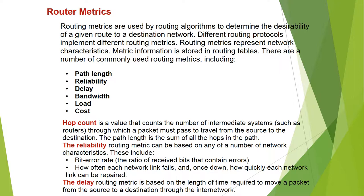Reliability routing metrics can be based on any number of network statistics. These include the bit error rate — the ratio of received bits that contain errors — and how often each network link fails, and once down, how quickly each network link can be repaired. The delay routing metric is based on the length of time required to move a packet from the source to a destination through the internetwork.